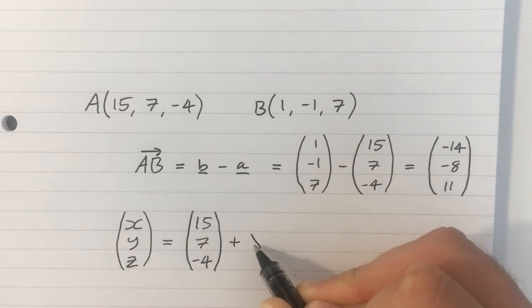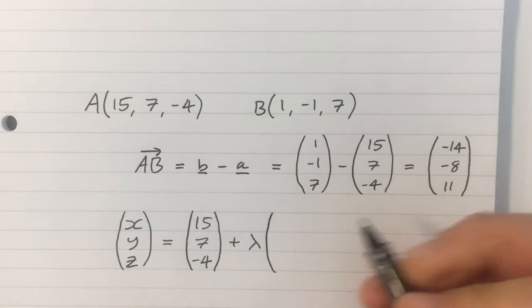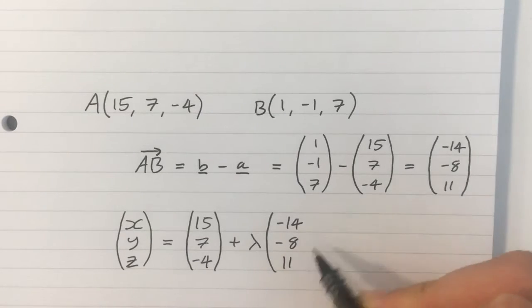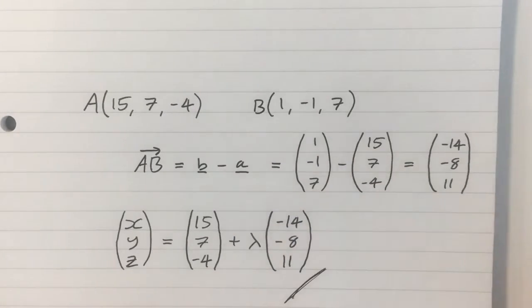Plus my parameter, lambda, multiplied by the direction of the line, which I've just worked out to be minus 14, minus 8, 11. And that is my answer.